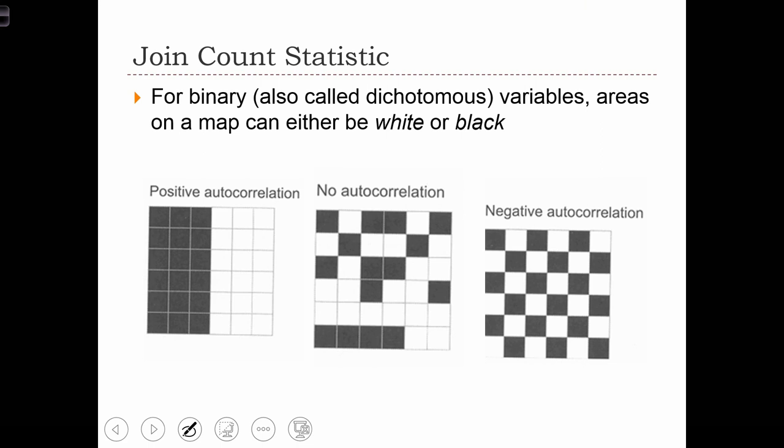We're going to define the join count statistic, which will allow us to detect clustering in binary maps. So in a binary map, areas on the map, instead of being many different colors indicating different variable values, are reduced into a categorical scheme, a binary coding scheme.